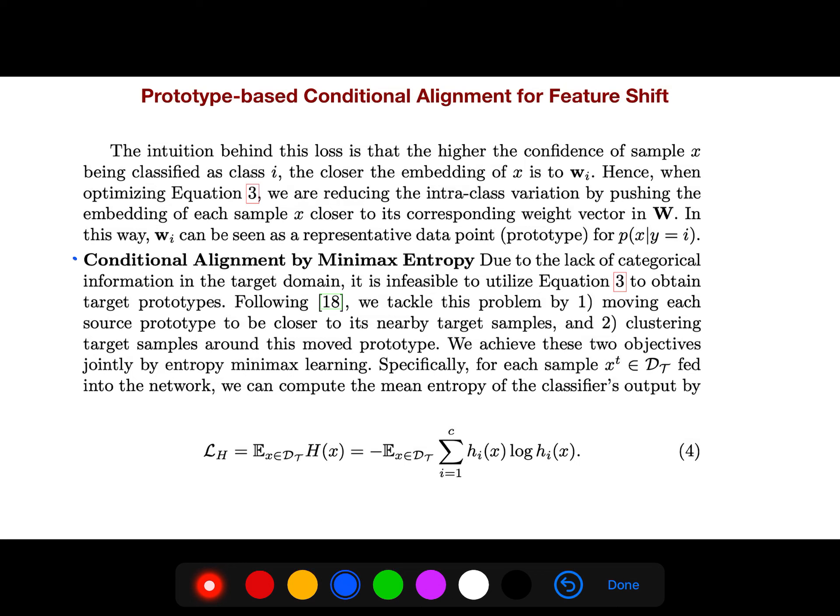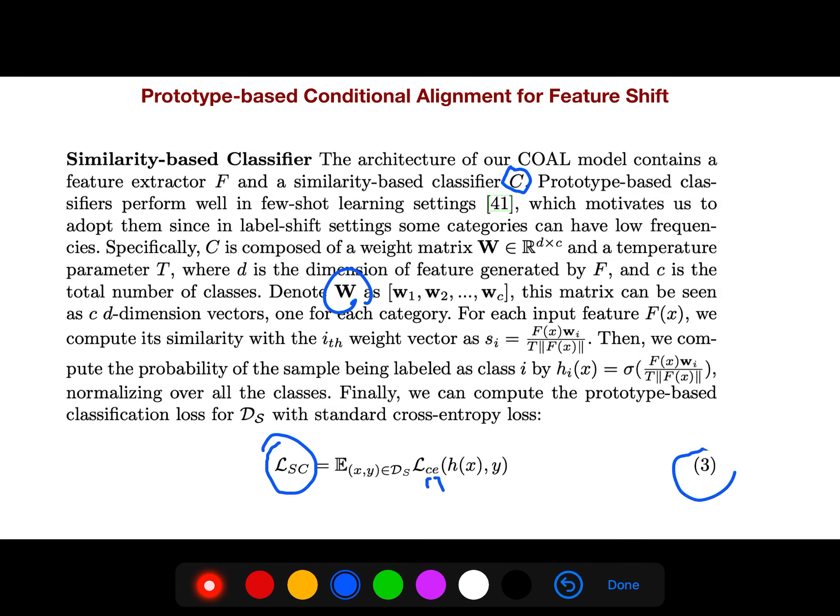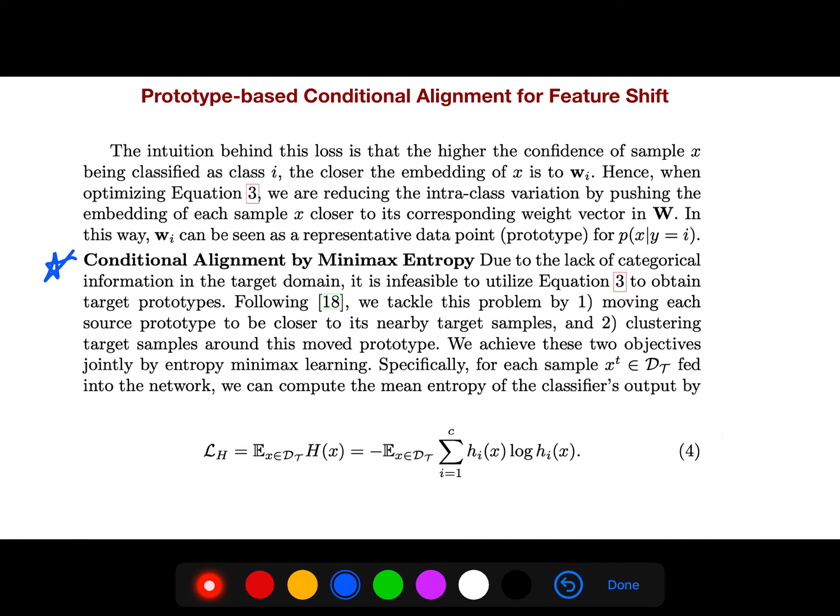Now we are talking about conditional alignments by minimax entropy. Due to a lack of categorical information in target domain, it is infeasible to utilize this equation to obtain target prototypes. We tackle this problem by moving each source prototype to be closer to its nearby target samples and clustering target samples around this moved prototype. So for each sample X fed into a network, we can compute the mean entropy of the classifier.